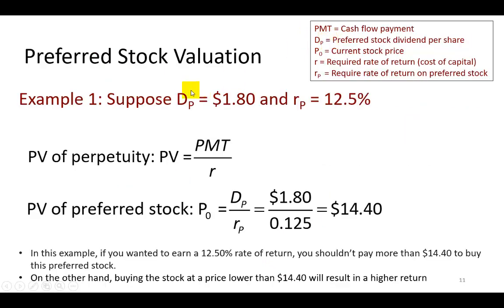And so as an example, if a preferred stock promises to pay $1.80 per period, per year in this case, and you require a return of 12.5%, using the present value of a perpetuity formula and defining it specifically for a preferred stock where the fixed cash flow payment is the preferred stock dividend, D sub P,